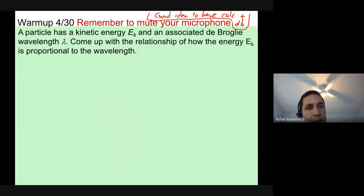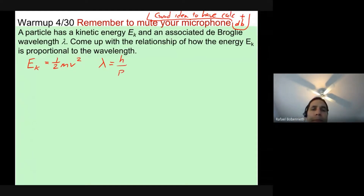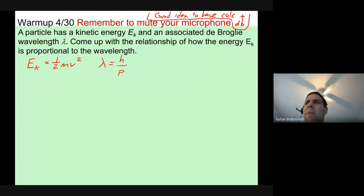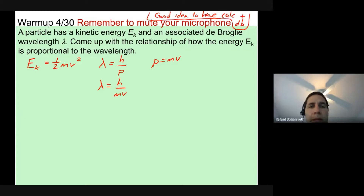To do that, we go back to kinetic energy from SL physics: one half mass times speed squared. We also recall that the de Broglie wavelength lambda equals Planck's constant divided by the momentum, which is mass times velocity. So the de Broglie hypothesis is: lambda equals Planck's constant divided by mass times velocity.